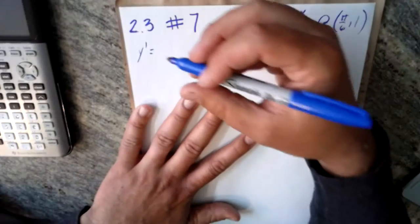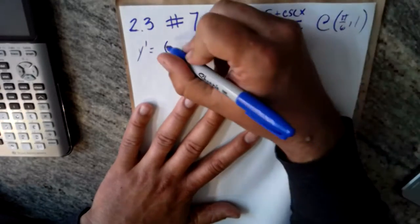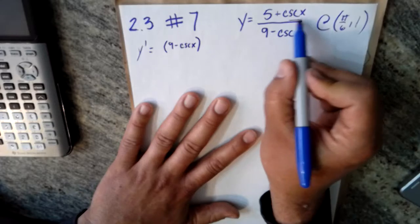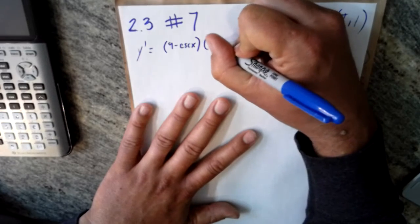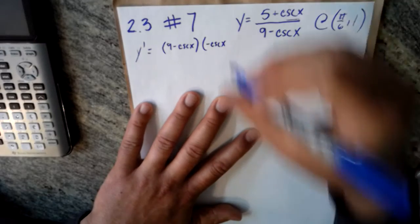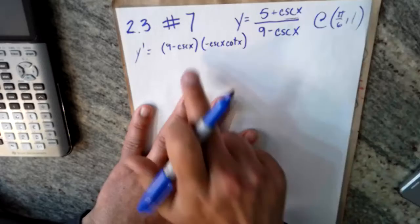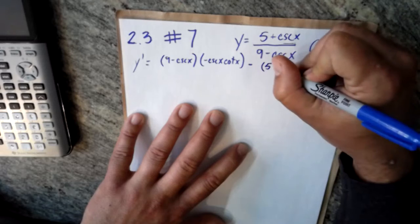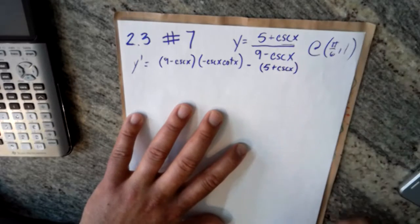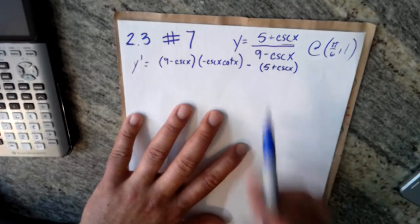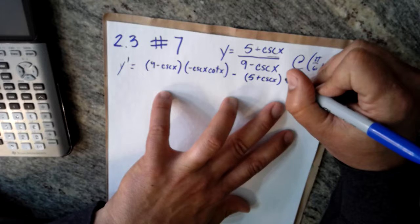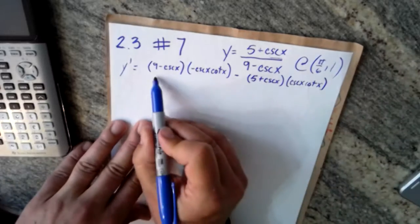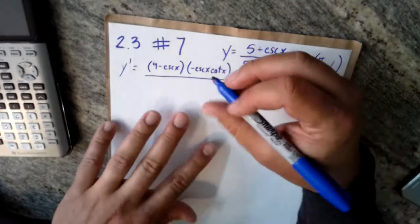That's how I remember the quotient rule. So you got low, nine minus cosecant of x, times the derivative of the top. The derivative of the top is negative cosecant times cotangent. That's low d high minus high d low, so the top times the derivative of the bottom. The derivative of nine minus cosecant of x is cosecant of x cotangent of x, all over the denominator squared, low low, so nine minus cosecant of x squared.